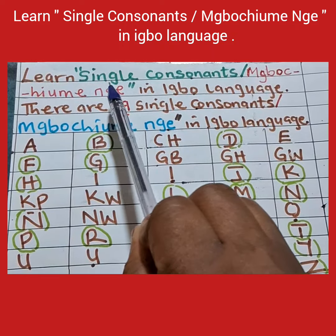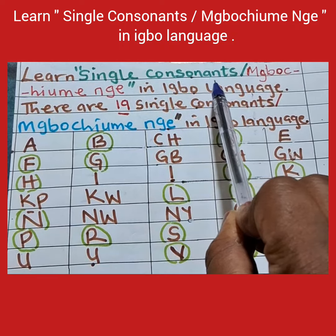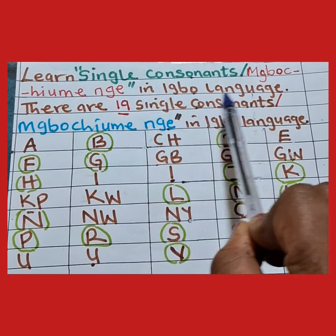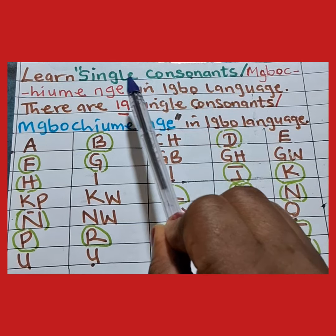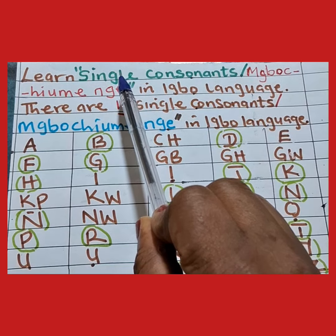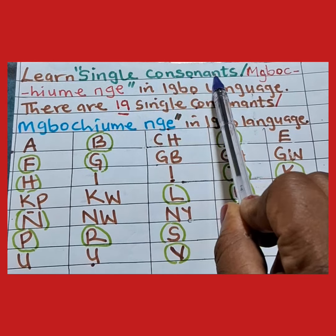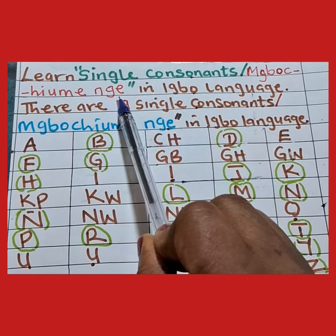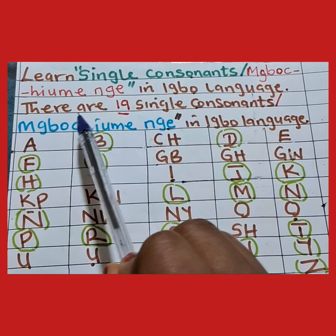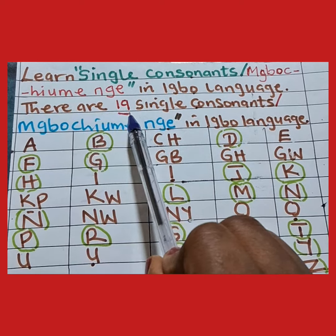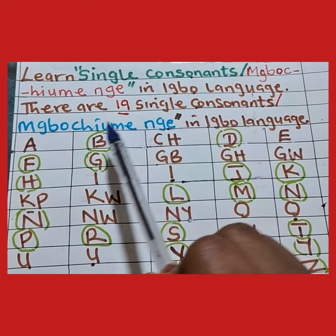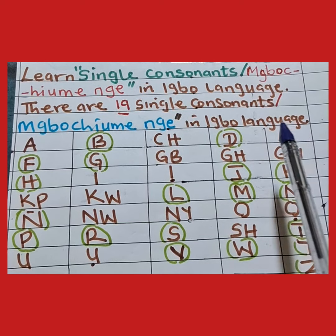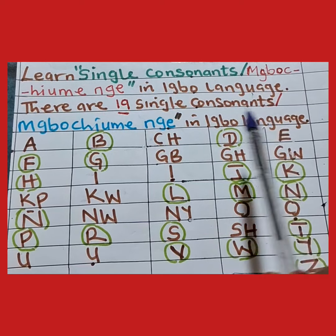Learn single consonants — Mbochumenge — in Igbo language. We are going to discuss about single consonants. It is called Mbochumenge in Igbo language. There are 19 single consonants in Igbo language. We are going to name them.